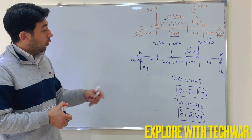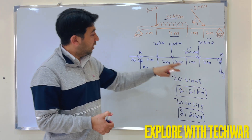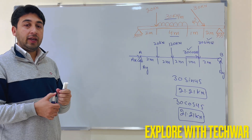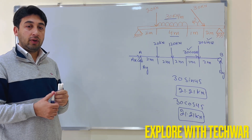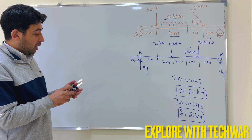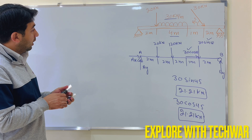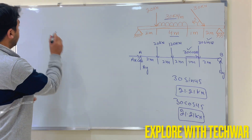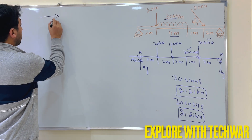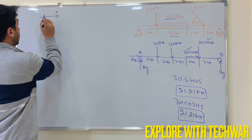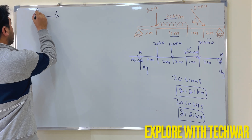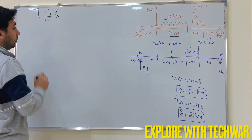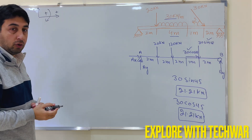Before starting to solve, I set my sign convention: rightward is positive, upward is positive, and clockwise moment is positive.